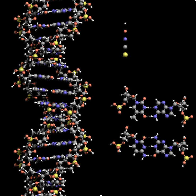DNA damages that are naturally occurring, due to normal cellular processes that produce reactive oxygen species and the hydrolytic activities of cellular water, also occur frequently. Although most of these damages are repaired, in any cell some DNA damage may remain despite the action of repair processes. These remaining DNA damages accumulate with age in mammalian postmitotic tissues, and this accumulation appears to be an important underlying cause of aging.